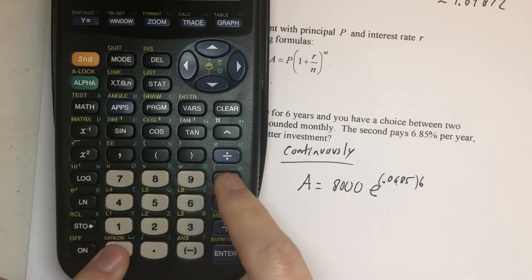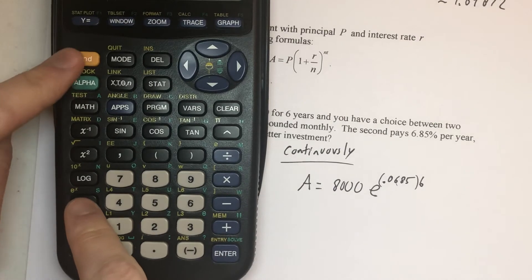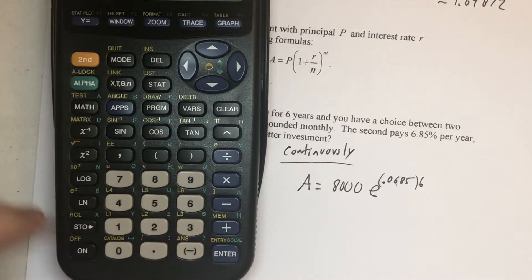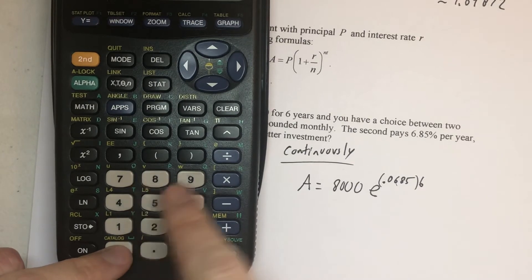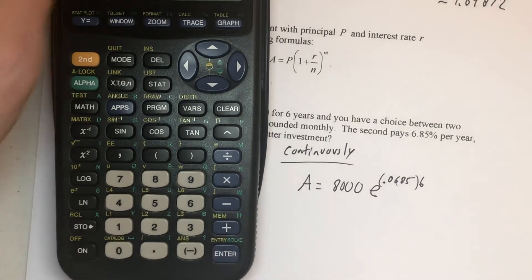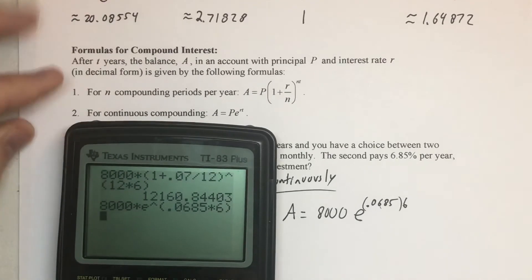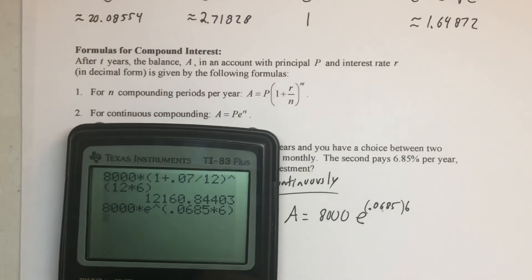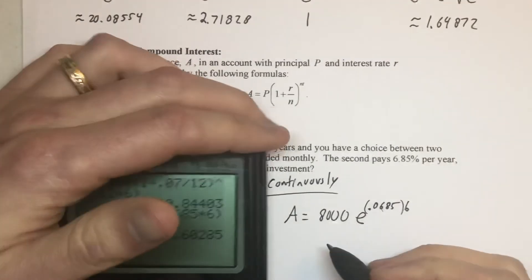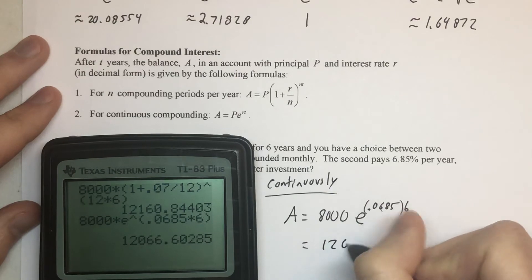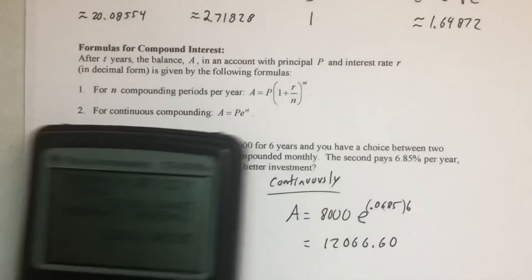8,000 times, and then my e is right here, so I'll go shift and the ln button to get e in there, 0.0685 times 6, and then close the parentheses. So there's what it's looking like, typed in, and looks like we're getting $12,066.60.